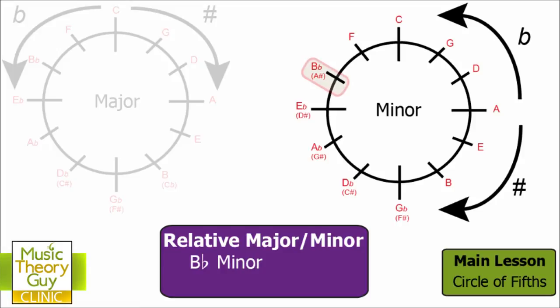So first of all, let's find that B flat on our circle of fifths. Here it is. And remember, we're going round the flat side of the circle. And what we do now, we need to count around from the A. And remember, we all start on an A on the minor circle of fifths. And we count up until we get to that B flat.